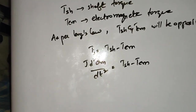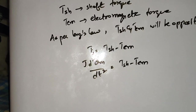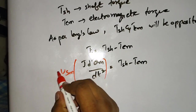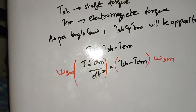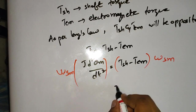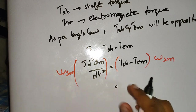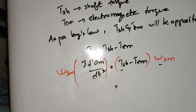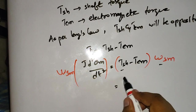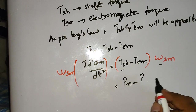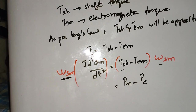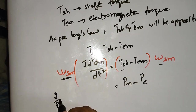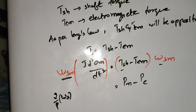If you multiply both sides of the above equation with ω_SM, then on the right-hand side, torque multiplied by speed gives power. Therefore, T_SH · ω_SM = P_SH, which is simply mechanical power P_M. And T_EM · ω_SM gives P_E. On the left-hand side, ω_SM is written as (2/P) · ω_SM.